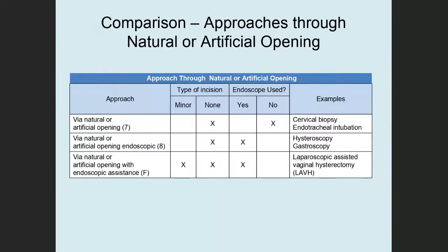Let's compare the natural or artificial opening approaches. Only value F includes an incision — endoscopic assistance. None of the others include an incision. An endoscope is used only for values 8 and F, not for value 7. So while they sound similar, there are significant differences among them.